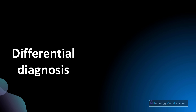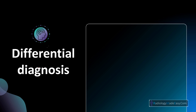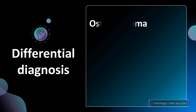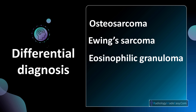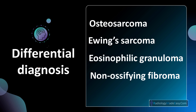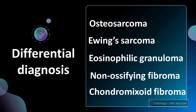So what are your differential diagnoses? It can be either osteosarcoma, because this is a 2-year-old boy and it is a possibility. Of course it can be Ewing's sarcoma too. Eosinophilic granuloma is another possibility. And finally, it can be a chondromyxoid fibroma.